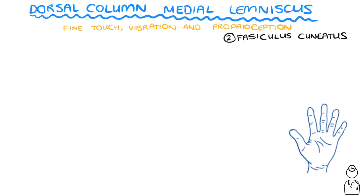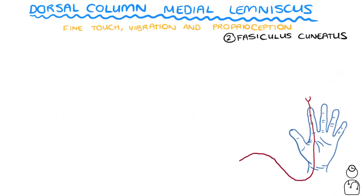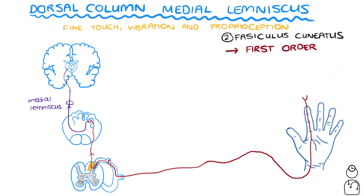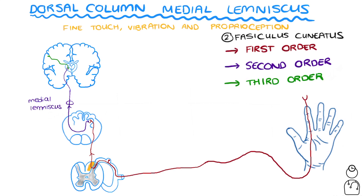Now we'll talk through the fasciculus cuneatus pathway, which relays sensation from the upper limbs. A sensory receptor on our finger picks up some sensation and sends the signal along a nerve, which makes its way to the spinal cord. This time the nerve needs to get onto the fasciculus cuneatus pathway, which is found laterally over here. It heads up to the medulla oblongata and synapses in the nucleus cuneatus — this is the first-order neuron. The second neuron arises in the medulla and decussates over to the other side, travelling up in the medial lemniscus to reach the VPL of the thalamus, where it synapses — this is the second-order neuron. The final neuron heads up to the hand part of the sensory cortex — this is the third-order neuron.